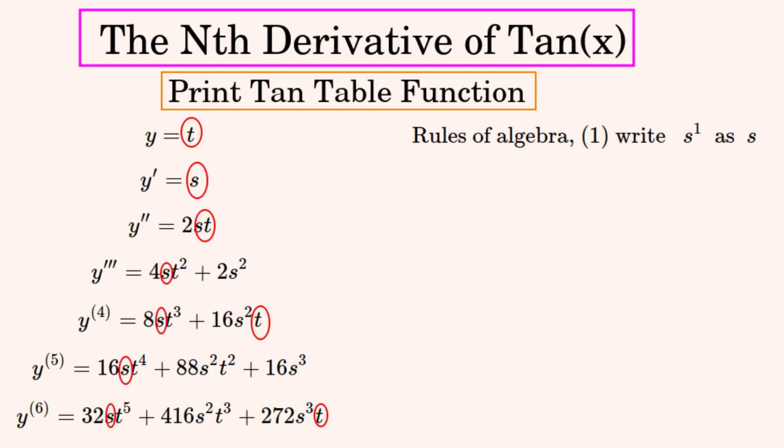So the first rule is that when writing a variable that's raised to the power of 1, then we write the variable without writing any indice. I've circled the examples here in red.